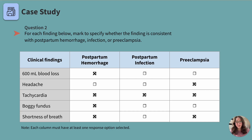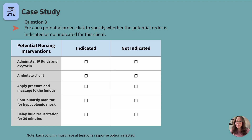Similarly to the last chart, you will select whether the following potential orders would be indicated or not indicated for this client. Pause the video, make your choices, then we'll review. Administration of IV fluids and oxytocin — indicated. We definitely want to get oxytocin on board because it will help the uterus contract down, which will aid in stopping the hemorrhage.